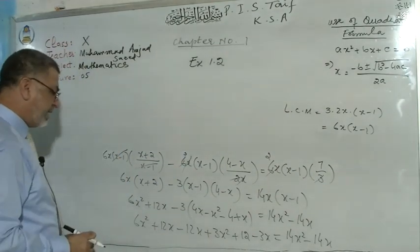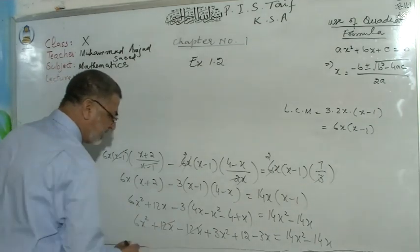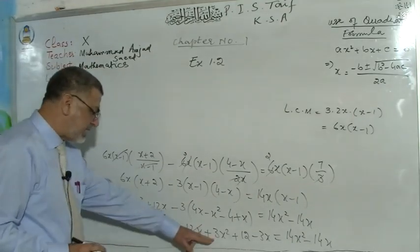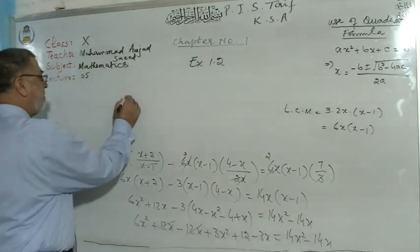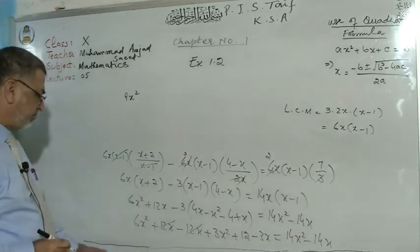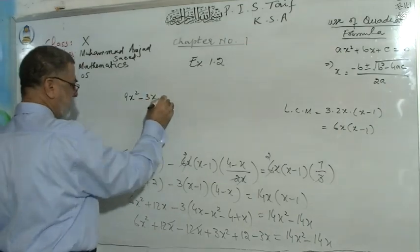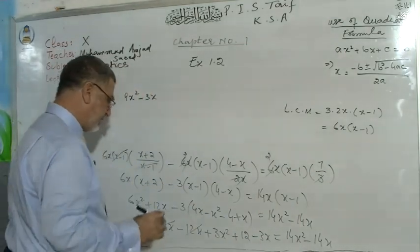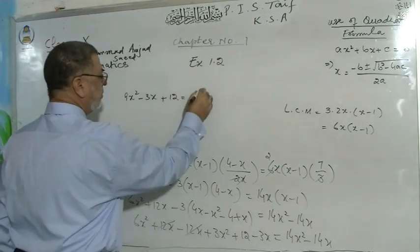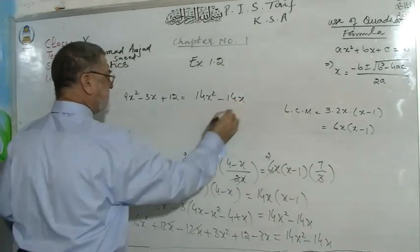Now we have plus 12x and minus 12x — they cancel out. 3x² + 6x² = 9x². Then we have minus 3x, plus 12, equals 14x² minus 14x on the right-hand side.